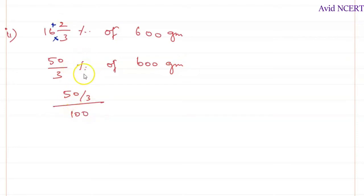Same steps are applied here, which is 50 by 3. The whole divided by 100 - when it is given as percentage, you have to divide by 100 - of or times, multiplied by 600.